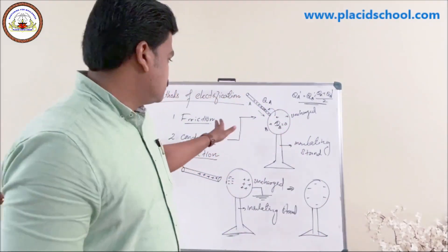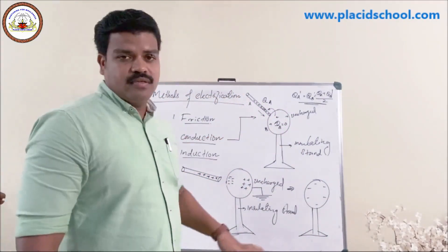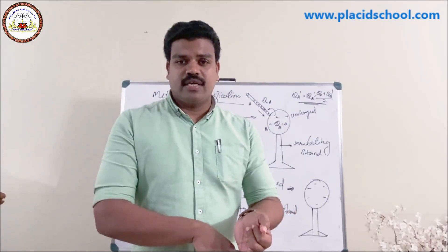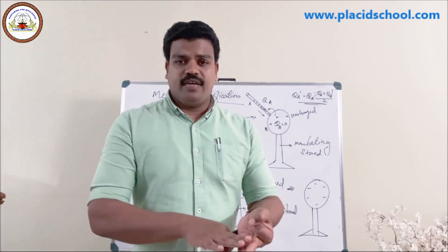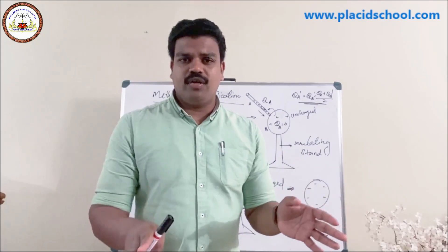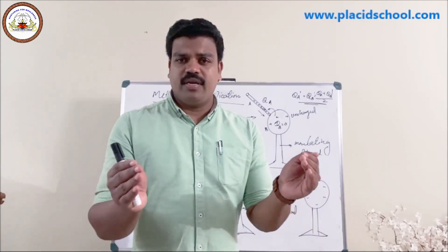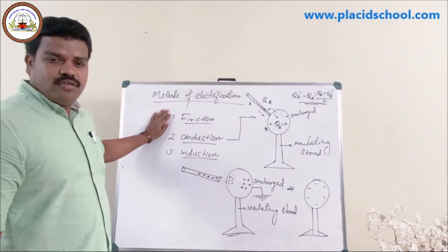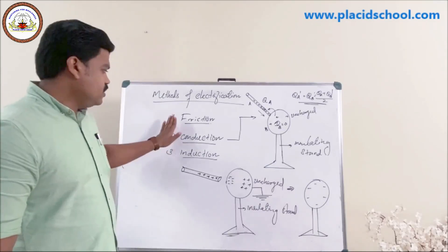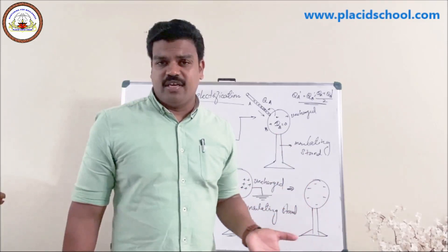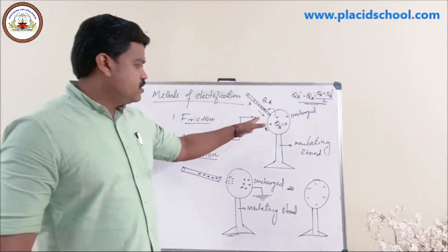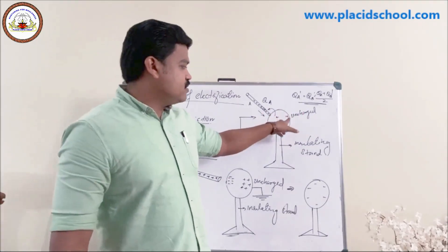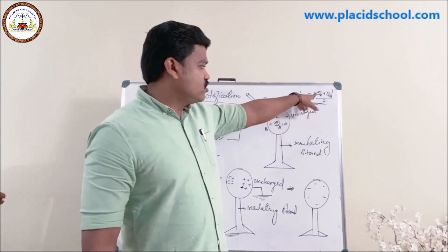In summary, we can electrify a body using three different methods. A deficiency of electrons causes a positively charged body; an excess of electrons causes a negatively charged body; equal numbers of positive and negative charges make it a neutral body. The three methods are charging by friction, charging by conduction, and charging by induction. In friction, electrons are transferred by acquiring heat energy. In conduction, after contact between two bodies with charges qA and qB, the resulting charges are qA' = qB' = (qA + qB) / 2.